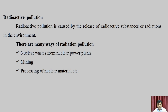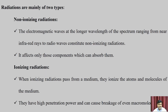There are many ways of radiation pollution, including nuclear waste from nuclear power plants, mining, and processing of nuclear material. Radiation is mainly of two types: non-ionizing radiation and ionizing radiation. The electromagnetic waves at the longer wavelength of the spectrum, ranging from near-infrared rays to radio waves, constitute non-ionizing radiations. They affect only those compounds which can absorb them.